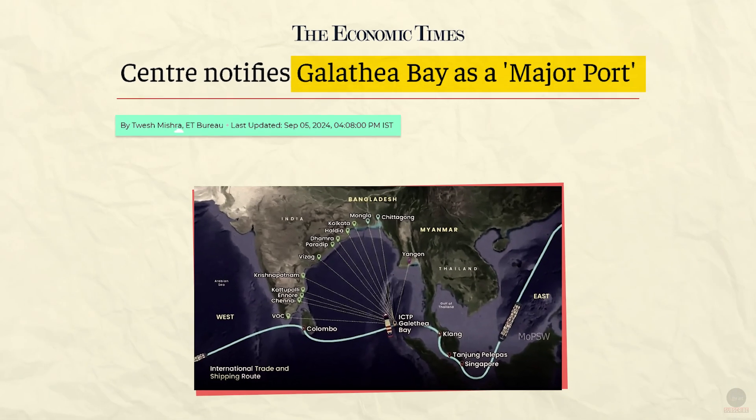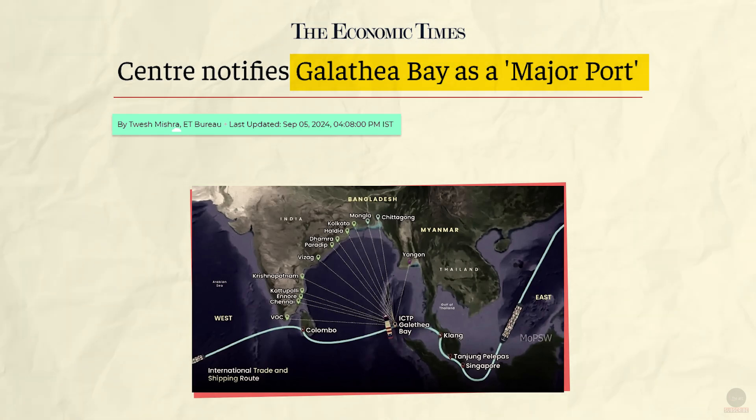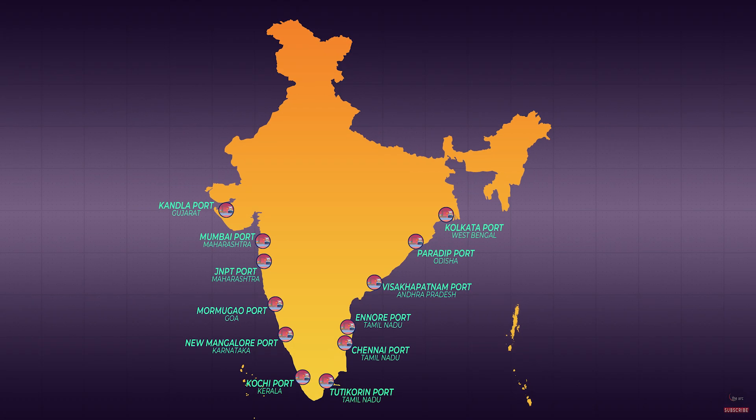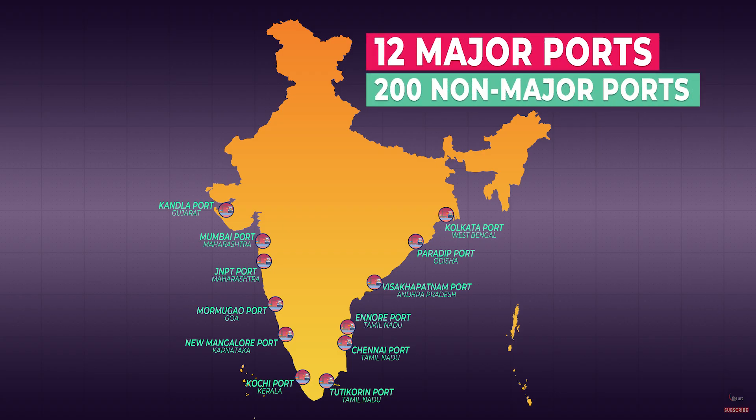The Central Government in September this year notified the International Transshipment Hub at Galathea Bay as a major port. India currently has 12 operational major ports controlled by the central government and another 200 non-major ones governed by the states, with the Galathea Bay Port becoming India's 13th major port.